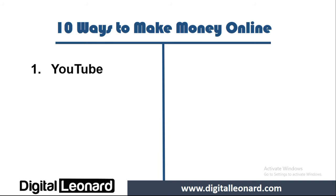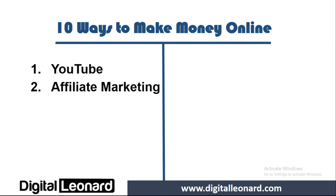Number two is affiliate marketing. Affiliate marketing is a platform where those who own the product have already created it, and you position yourself as a middleman between those in need of this product and the product owner. All you need to do is recommend this product — either via review, making a video on the product, or recommending it to other people. You join an affiliate platform like Expertnaire. I will leave links to all of these things in the video description.